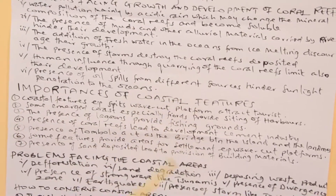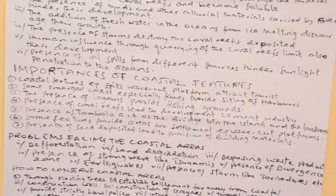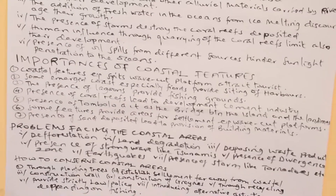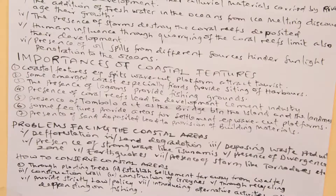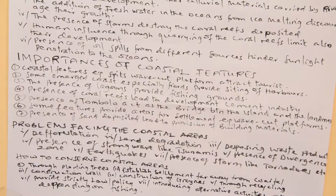Dear students, let's describe the importance of coral and coastal features. Coral reef is among the coastal features, whether erosive or depositional — including blowholes, bays, beams, and others of the same kind. Firstly, coastal features such as cliffs, wave-cut platforms, and bays attract tourism. Most people just go to look at them and enjoy. Some submerged coastal features, especially fjords, provide sites for harbors.